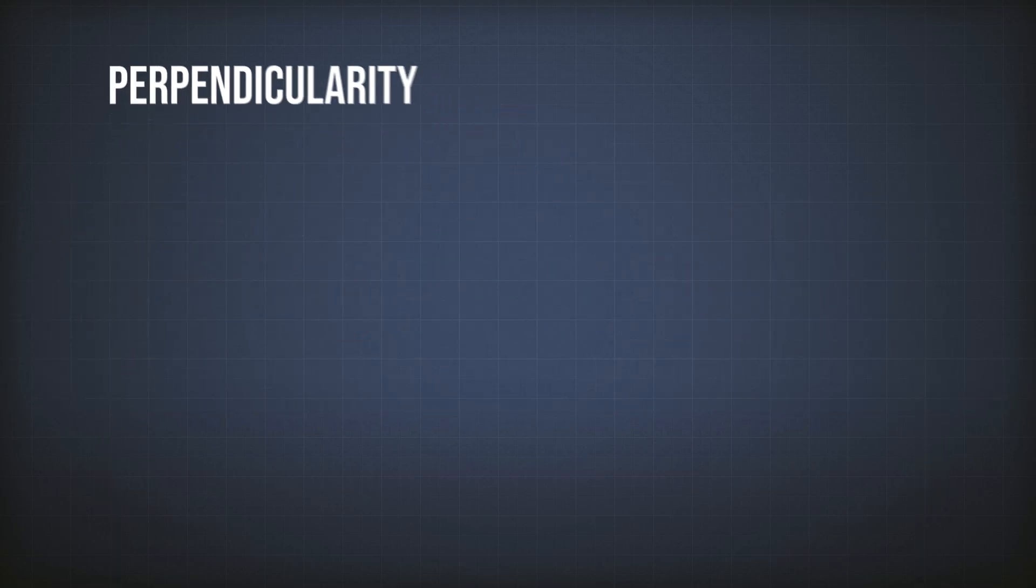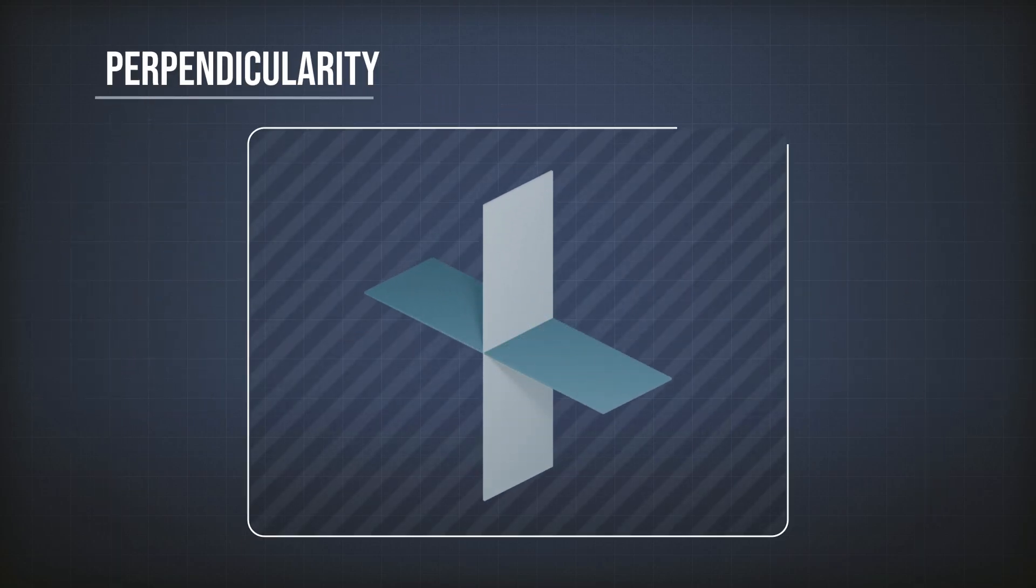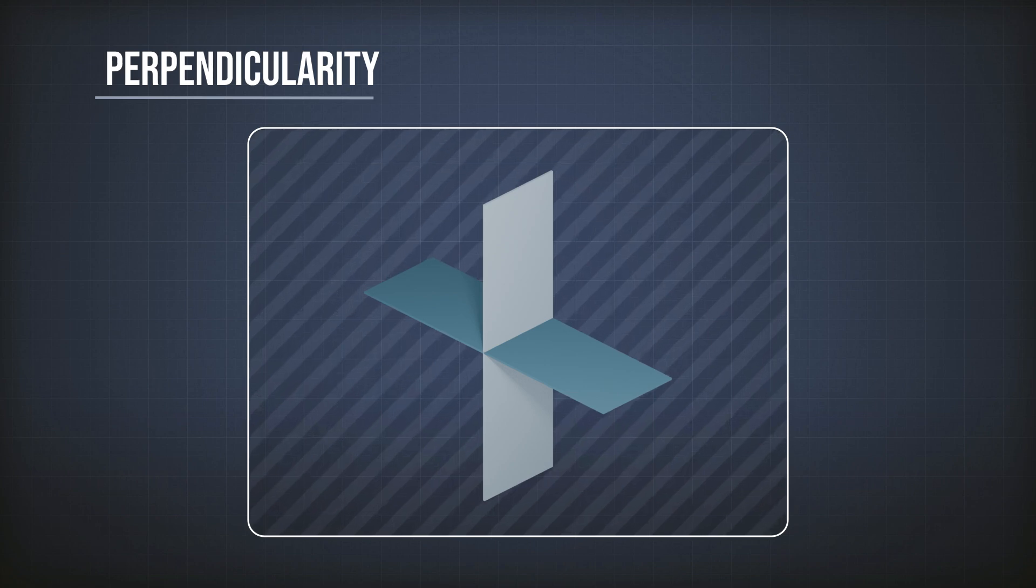Perpendicularity. Like parallelism, perpendicularity is the tolerance that controls that an element in a part is 90 degrees inclined to another element.